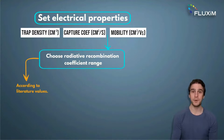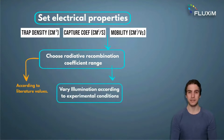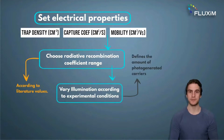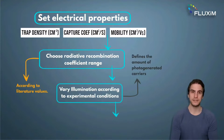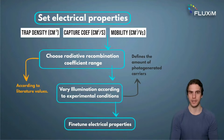At this point, you should sweep the illumination intensity. The goal here is to find the intensity that reflects the experimental conditions and gives you a good fit for the initial curvature of the decay. Eventually, you can fine-tune the electrical properties set at the beginning to fit the long tail of the decay.